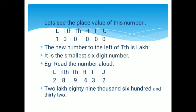Now students, let us see an example. You have to read the number aloud. First of all, let us see the place value of the number: units 2, tens 3, hundreds 6, thousands 8, ten-thousands 9, lakhs 2. So when you read this number, you read it as 2 lakh, 89 thousand, 632.